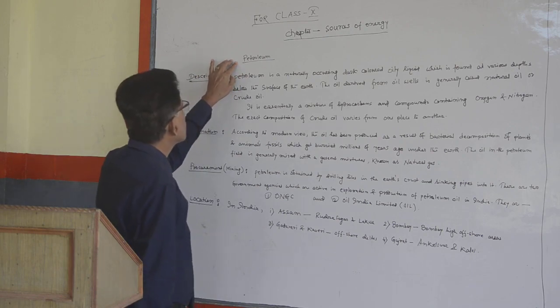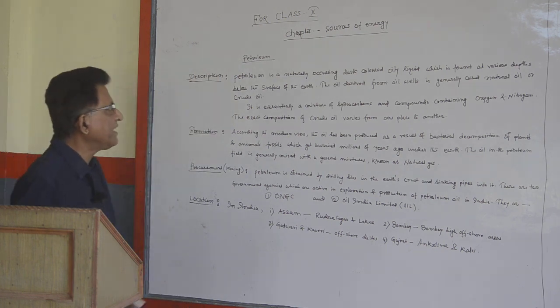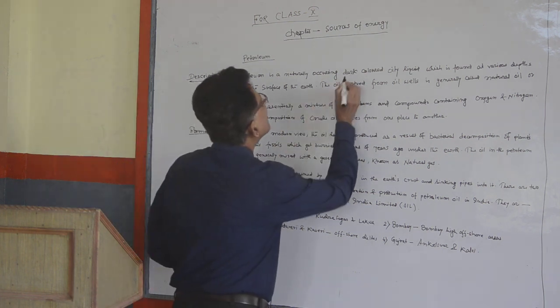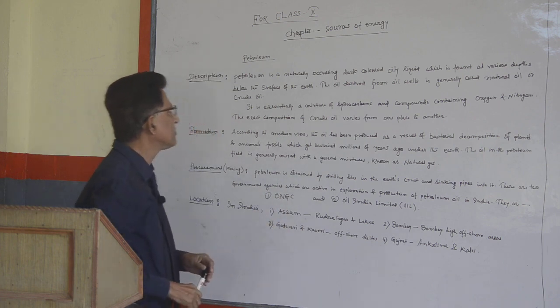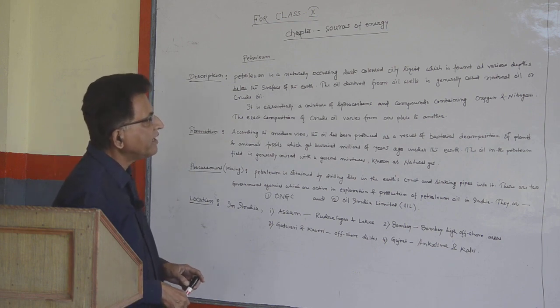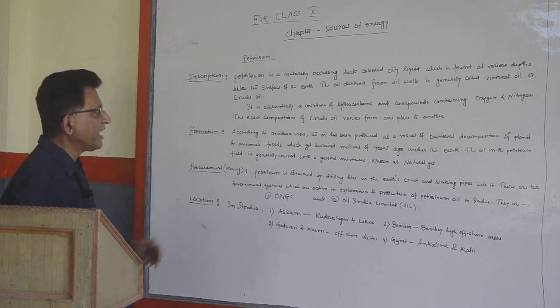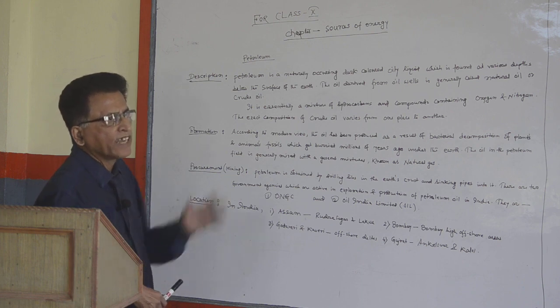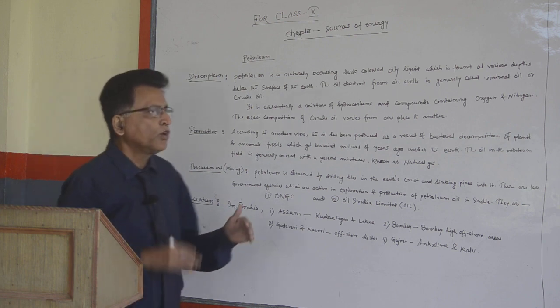The sources of energy is petroleum. Description: Petroleum is a naturally occurring dark colored oily liquid which is found at various depths below the surface of the earth. The oil derived from oil wells is generally called natural oil or crude oil. It is essentially a mixture of hydrocarbons and compounds containing oxygen and nitrogen. The exact composition of crude oil varies from one place to another.